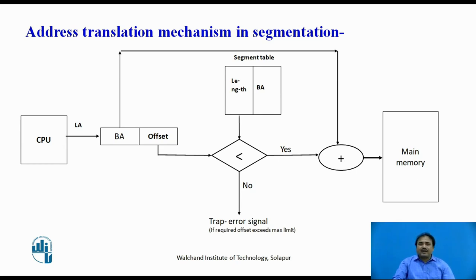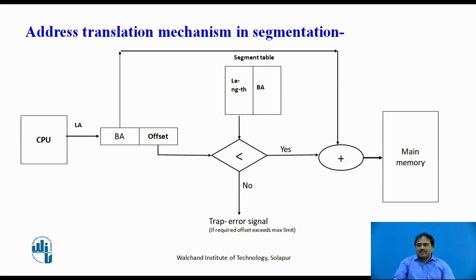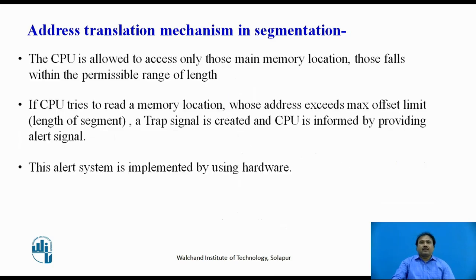This diagram shows the mechanism: whenever the CPU wants to access an instruction, it generates a logical address pointing to the base address in secondary memory plus an offset. If the offset is less than the segment length, it is a legal read. If the offset is greater than the segment length, it creates an error called a trap. When a trap occurs, the CPU is prevented from reading that location.